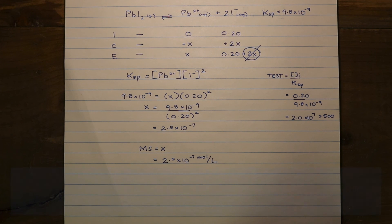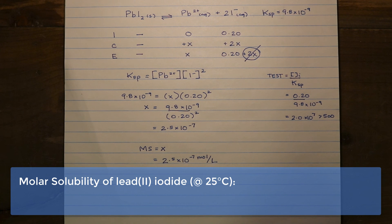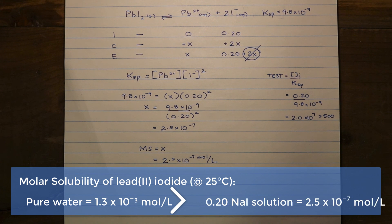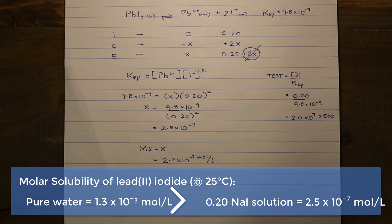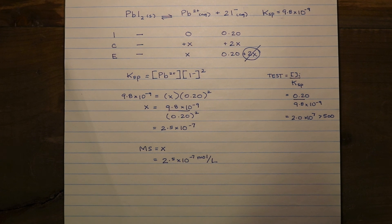Comparing back: the molar solubility of lead(II) iodide in pure water at this temperature was 1.3 times 10 to the negative 3 mol/L, which is significantly greater than the 2.5 times 10 to the negative 7 mol/L we found here. This makes sense because the iodide ion is already present in solution, so a much lower concentration of lead and iodide ions is needed to reach saturation. Hopefully you now understand how to calculate molar solubility in pure water and in a solution containing a common ion, and can justify the difference between the two values.